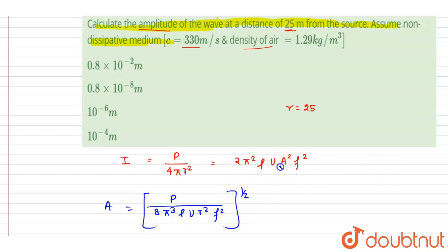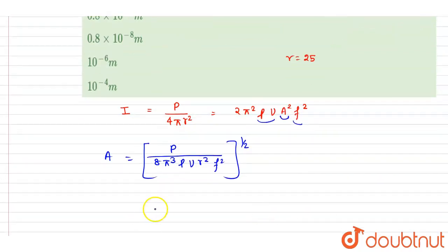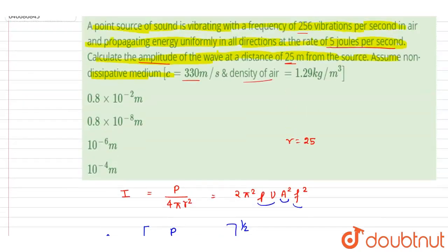One-half, right, since square root is there. So ρv f into this 2π² and this. So just put the value. Power is given, it is 5 joules per second.